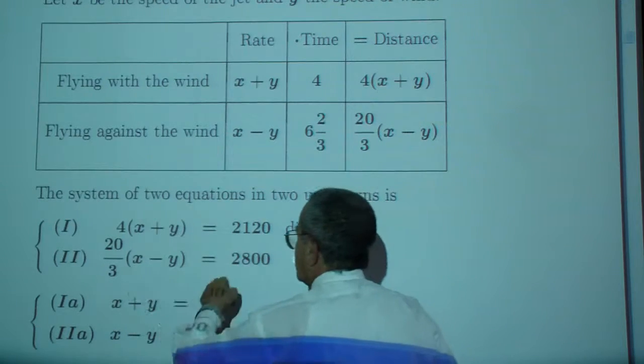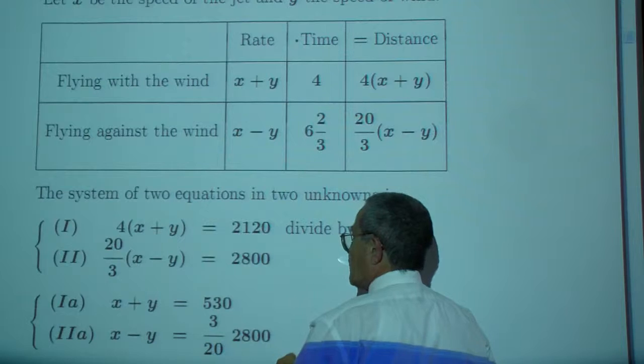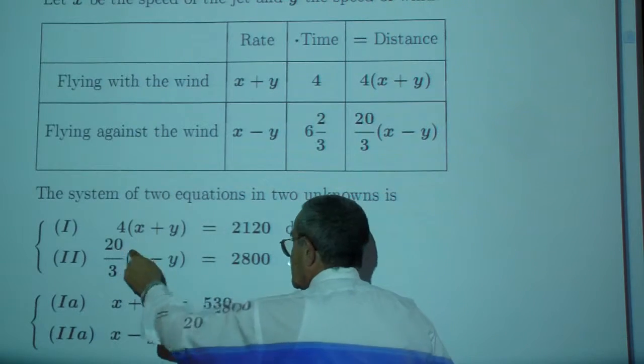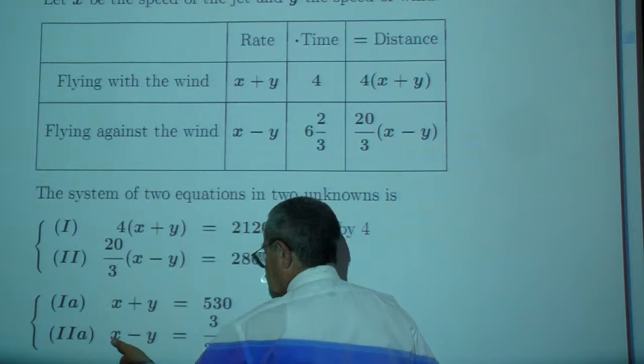Crank it through. Multiply it by 3. Distribute. Actually divide both sides by 4, and divide both sides by 20. You get x plus y, x minus y.